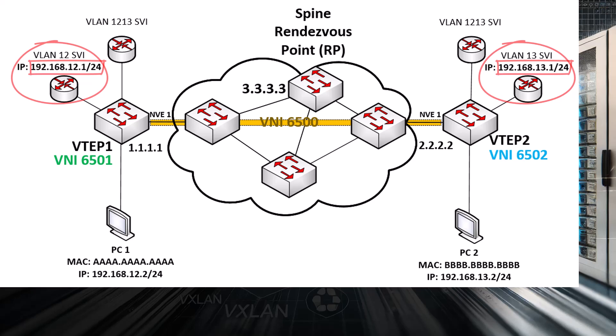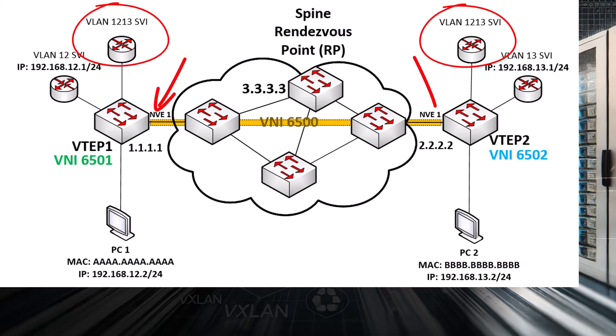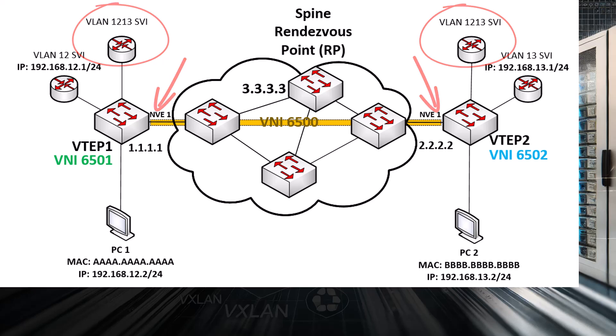We will also create a transit VLAN, which we will associate with the transit VNI 6500, which will be applied to the NVE interfaces. Once a packet reaches the transit SVI, it will use the MPBGP EVPN mechanisms for VXLAN to find the corresponding VTEP2 to achieve the routing. So let's get down to how to configure the VTEPs.